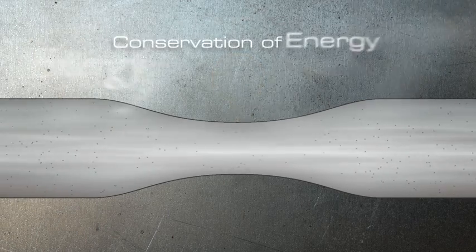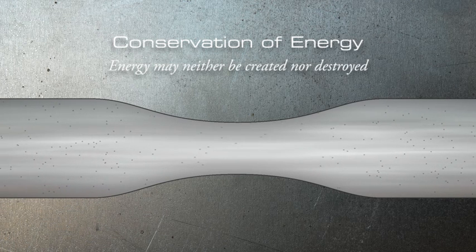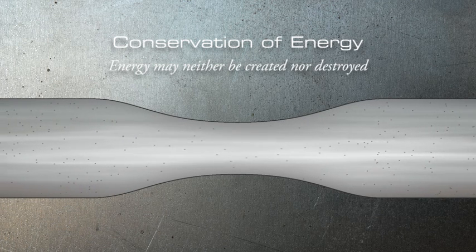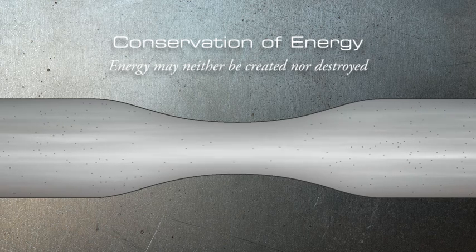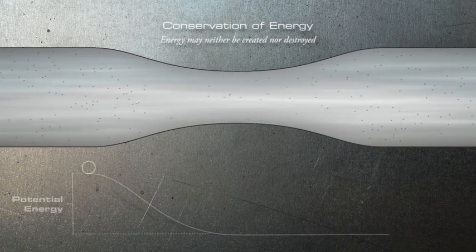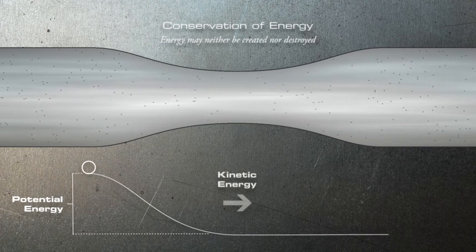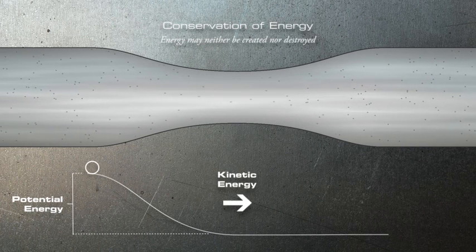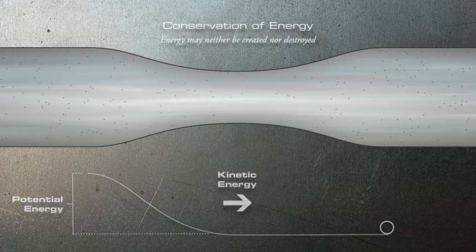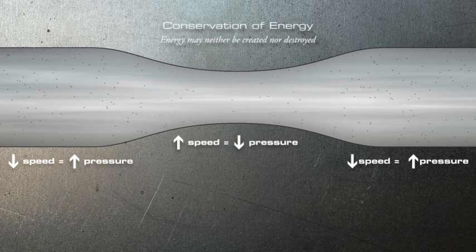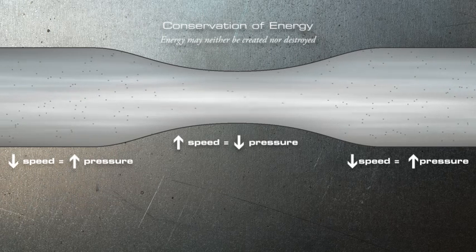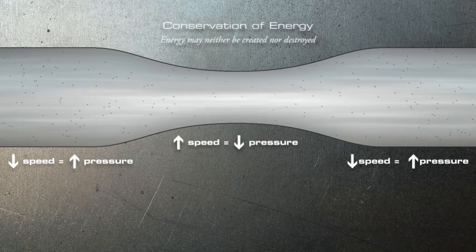Bernoulli's Principle is a consequence of the conservation of energy. The law of conservation of energy states that energy may neither be created nor destroyed, but takes on various forms. In this example, as the ball rolls down the hill, the loss of potential energy is converted into kinetic energy, illustrating the law of conservation of energy. So, more speed in kinetic energy means less pressure, and more pressure means less speed in kinetic energy.